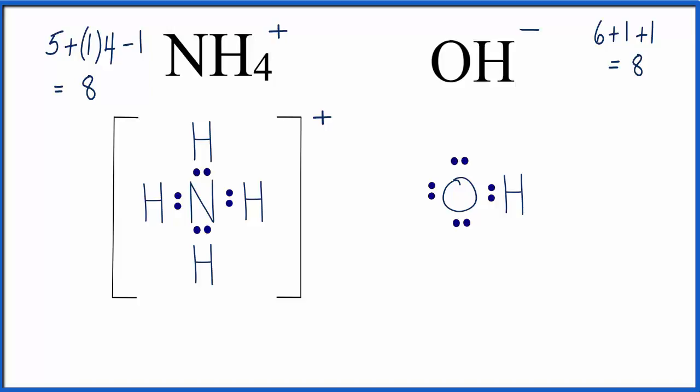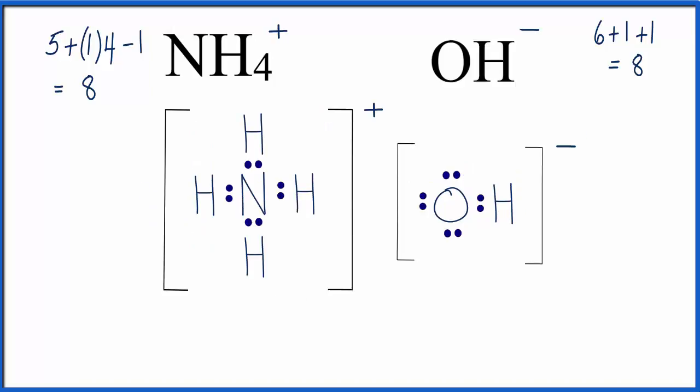Much like we did with the ammonium, we need to put brackets around this, and then put a negative charge to show that it's an ion. So because we have a positive and negative, those two charges are going to attract, and that's what's going to form the ionic bond. It's going to be made up of the ions, the NH4 plus ion and the OH minus ion. And when that happens, we have NH4OH.